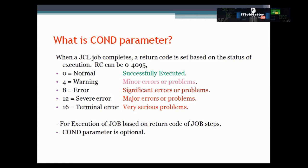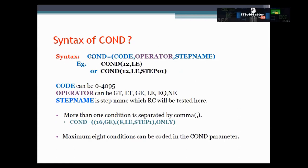Now before we understand how the COND parameter works, let's see its syntax. The COND parameter syntax looks like: COND=(code, operator, stepname), where code can vary from 0 to 4095 and the operator value can be GT, LT, GE, LE, EQ, and NE — where GT means greater than, LT means less than, GE means greater than or equal, LE means less than or equal, EQ means equal, and NE means not equal. The step name is the name of the step whose return code will be tested.